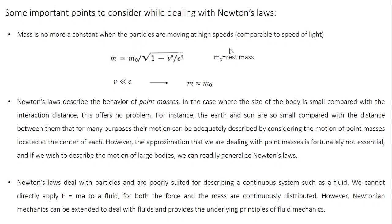When a particle is at rest, its mass can be called M_0, the rest mass. But when the particle starts moving, its mass is going to be different. The moving mass is related to the rest mass M_0 as M = M_0 / √(1 - v²/c²).